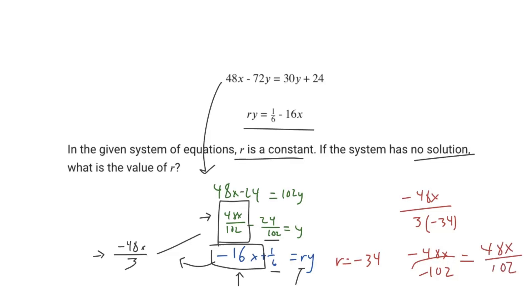So we can see now that these slopes do line up, right? 48x over 102, 48x over 102. It's kind of messy, but you get the idea.